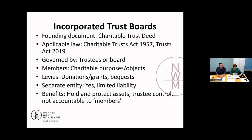We'll move on to the next slide, which is an extension of the unincorporated trust structure, and that's the incorporated trust boards. This is probably one entity that a lot of your catchment groups may consider. We're going to talk about the two main entities that you're probably going to want to use if you're a fairly established or going to be a long-term organisation, and that's to incorporate either as a society or an incorporated trust board.